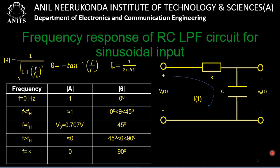Using the fact that the magnitude of a + jb is √(a² + b²) and angle of a + jb is tan⁻¹(b/a), we get the gain as 1/√(1 + (f/fH)²), where fH = 1/(2πRC). fH is called the upper cutoff frequency. The low-pass filter passes frequencies less than fH and attenuates frequencies greater than fH.